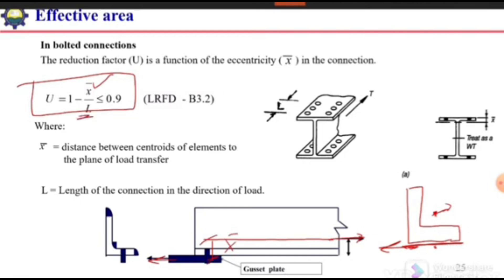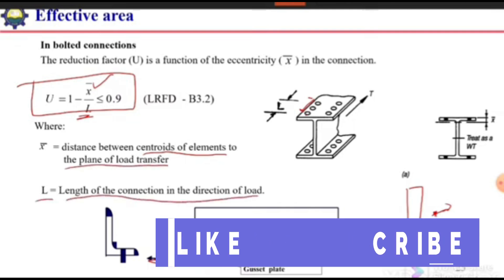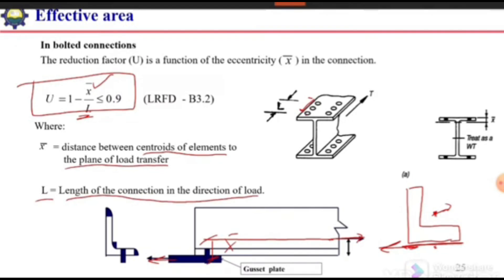X-bar is defined as the distance from the centroid of the element to the plane of load transfer. L is the length of the connection in the direction of load — the center-to-center distance between the bolts in one row, from the first to the last bolt.